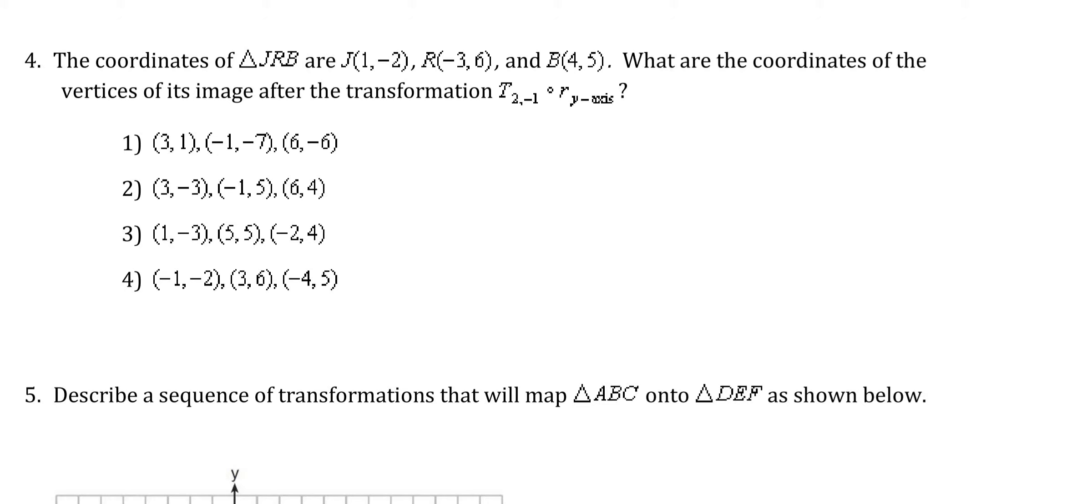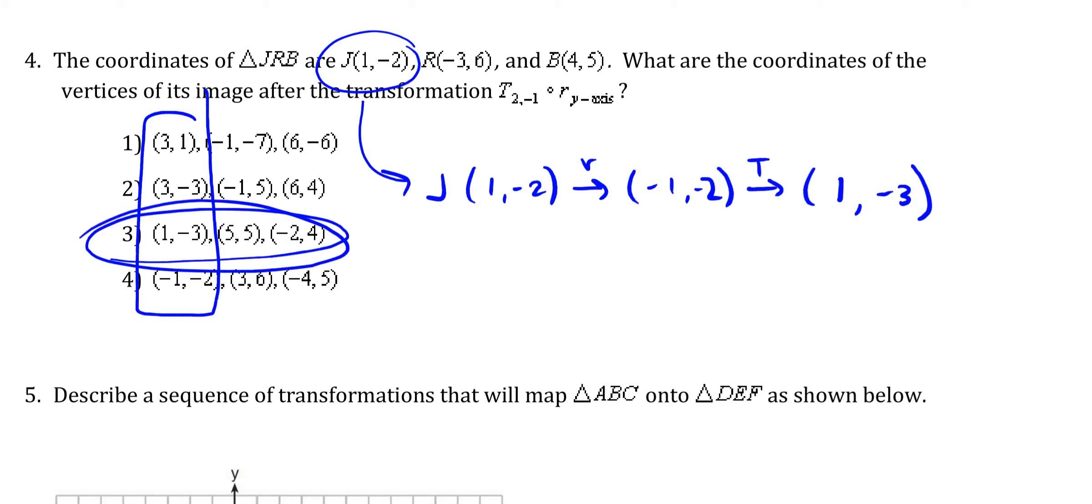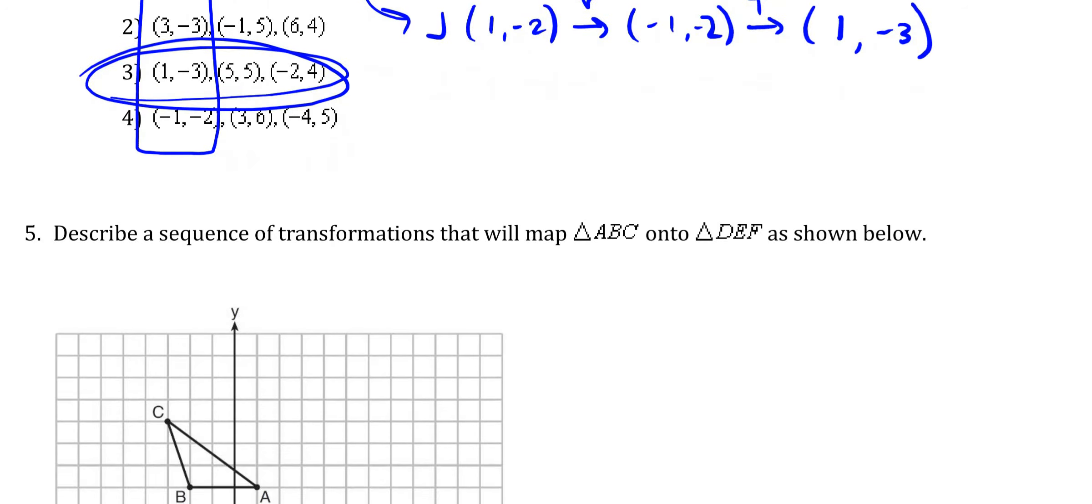What are the coordinates of this triangle after this image? Anytime you have a question like this, and this is just a good test-taking skill, notice that all of the first coordinates are different. So if I just figure out which one J makes, I should be in good shape. So J is 1, negative 2. After the reflection of the Y-axis, that's going to become negative 1, negative 2. And after the translation, I would add 2, so that becomes 1, subtract 1, so that becomes negative 3. The only one that has 1, negative 3 as a point is choice 3. So even though it looks like you had to do 3 times the work, you really just needed to do 1 point.